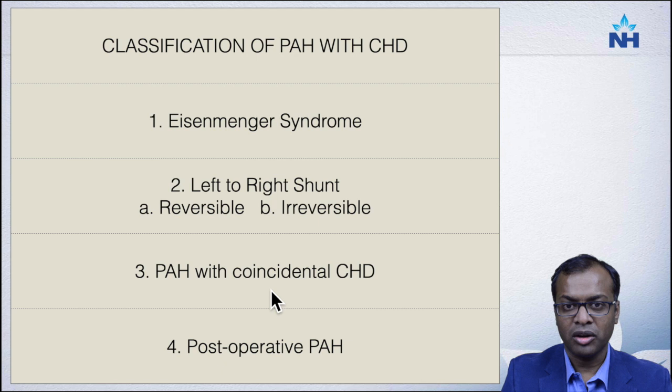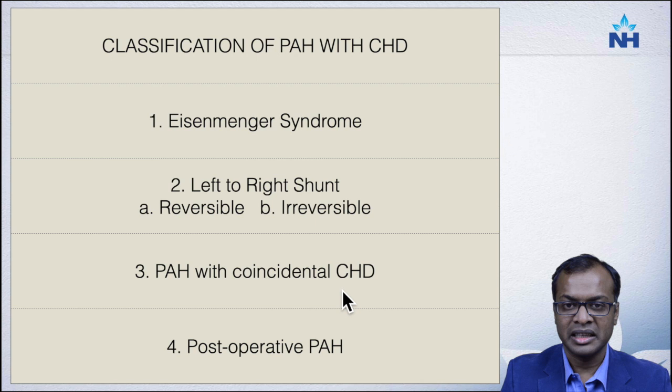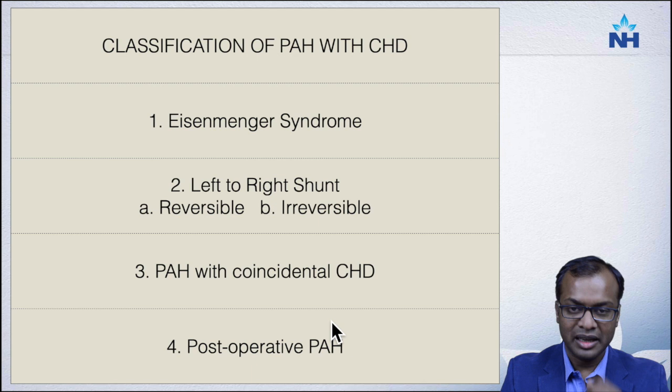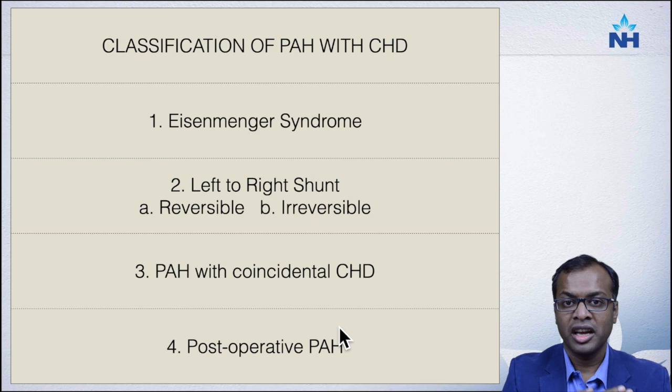The third group is also common — pulmonary arterial hypertension coincident with a congenital heart disease that cannot account for it. For example, a patient with severe pulmonary hypertension with a tiny ASD, or severe pulmonary hypertension with just one abnormal pulmonary venous drainage to the right side — in those cases it is a coincidental finding unlikely to account for the hypertension. The fourth group is post-operative pulmonary artery hypertension, where patients who have PAH are operated on but pulmonary pressures persist to be high.